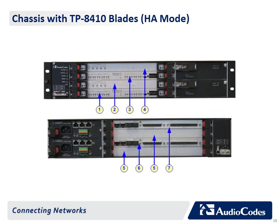The chassis with TP8410 blades in high availability mode hosts the following: (1) Front panel slot 1, active TP8410 blade; (2) Slot 2, active synchronization and alarm blade; (3) Slot 3, standby redundant TP8410 blade; (4) Slot 4, standby redundant alarm and status blade; (5) blank panels covering unoccupied slots.